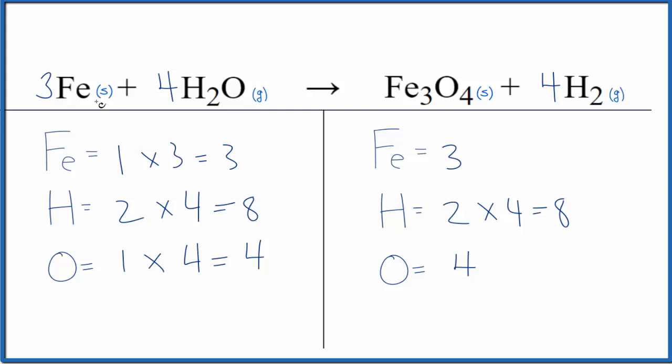This is Dr. B with the balanced equation for Fe plus H2O yields Fe3O4 plus H2. And the type of reaction, single displacement. Note this would also be a redox reaction because the iron and the hydrogen, they've changed their oxidation state. Thanks for watching.